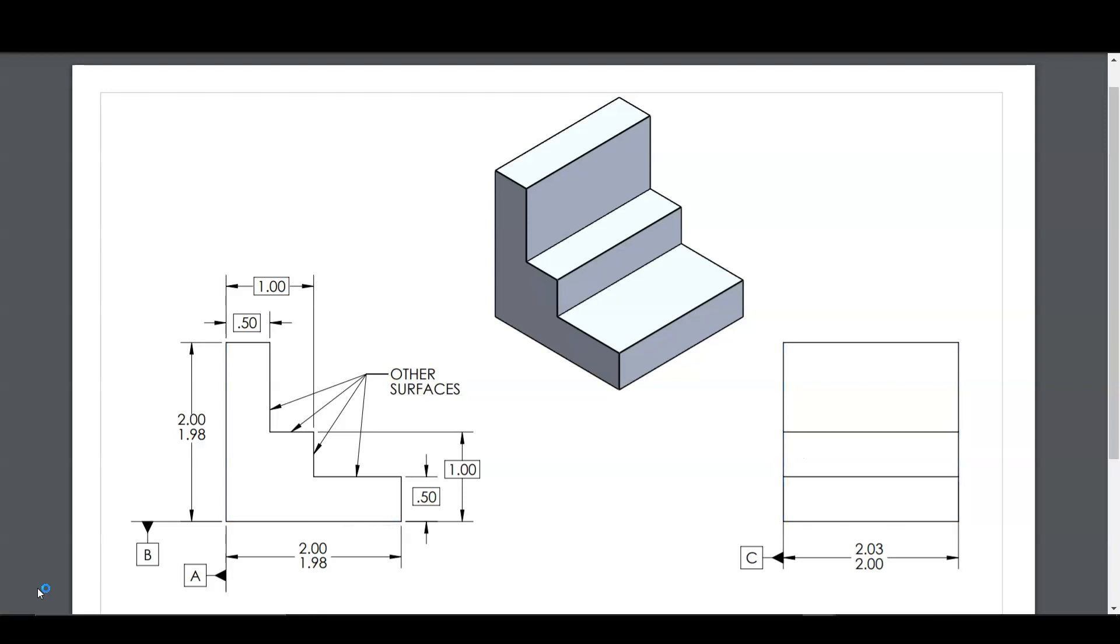We see these datum feature symbols on the drawing. They're connected to extension lines leading to the respective surfaces, and in the case of datum feature C, it's connected to the dimension line denoting the width of that dimension.